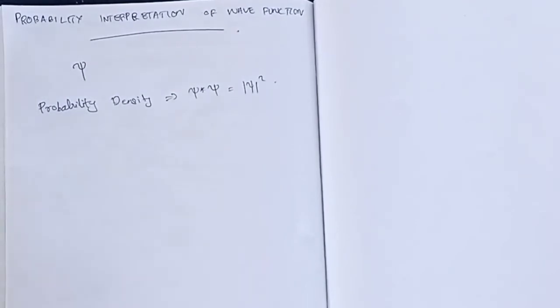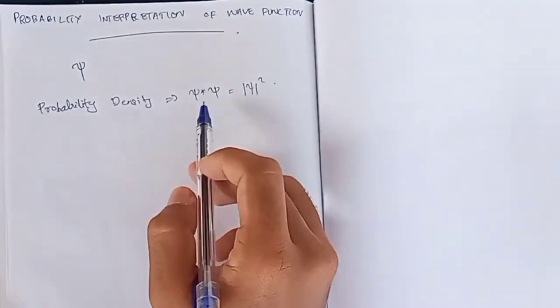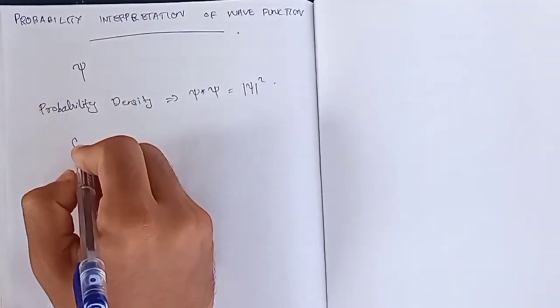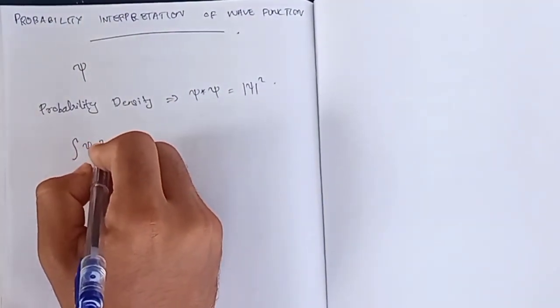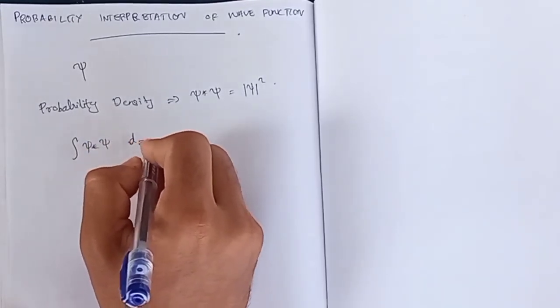For simplicity — that's the probability density. If a particle exists in a given region, if you find a particle exists in a region, the particle exists in that region — the probability is 1. Then we have the integral equal to 1.